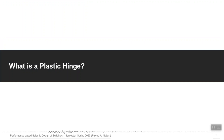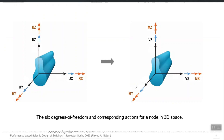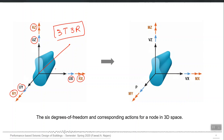Let us start discussing what a plastic hinge is. For any cross-section — a beam or a column — in three-dimensional space we have six degrees of freedom: three translational degrees of freedom, u_x, u_y, u_z, and three rotational degrees of freedom about the same three axes, r_x, r_y, r_z. So there are six ways in which any point in three-dimensional space can move: translate in three directions or rotate in three directions.